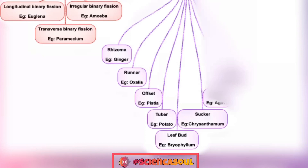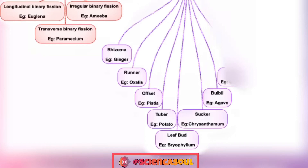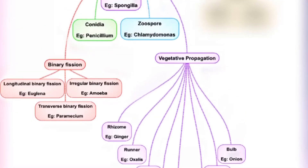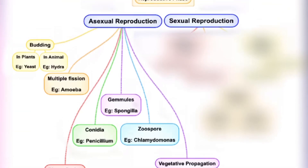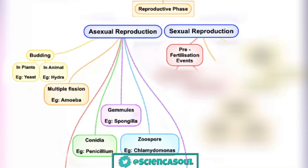Next is bulbil — for example, agave. A bulbil is a small young plant produced vegetatively from axillary buds on the plant's stem. Next is bulb — for example, onion. These are shortened underground storage structures. This concludes asexual reproduction.